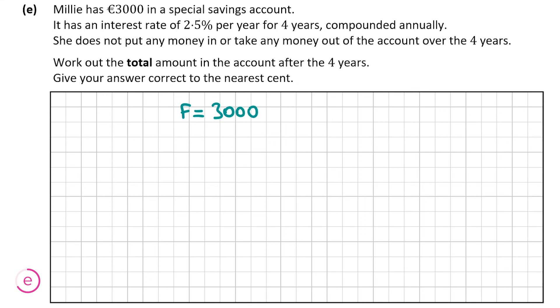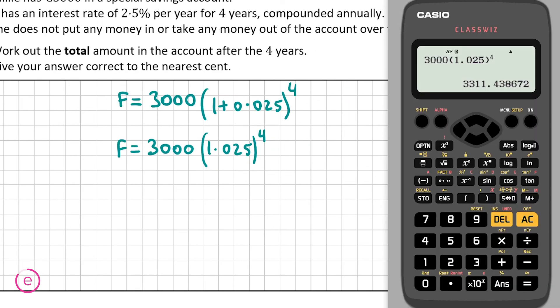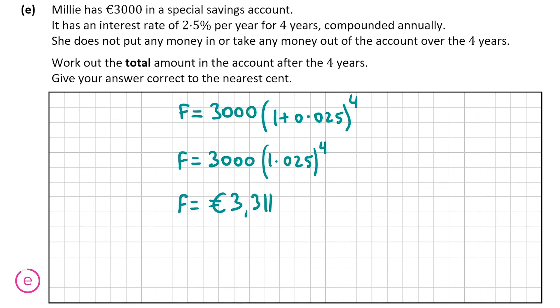It's going to be F is equal to P, which is €3,000 times 1 plus I, so 1 plus 0.025. Be careful, 2.5% isn't 2.5 or 0.25, it's 0.025. And that's to the power of 4. We can write that as €3,000 times by 1.025 to the power of 4. Now we're going to pop this into the calculator to see what answer we get. We get €3,311.438672. Correct to 2 cents, that's €3,311.44. That's our answer for part E, that's the amount of money that Millie has in her account after the four years correct to the nearest cent. Obviously that's 2 cents, therefore to two decimal places. That's our answer for part E, the final part of the question and the end of the video.